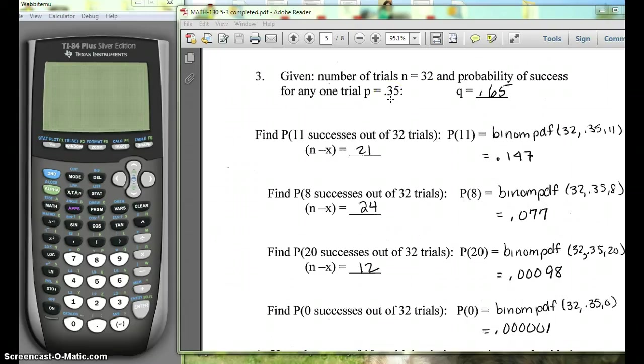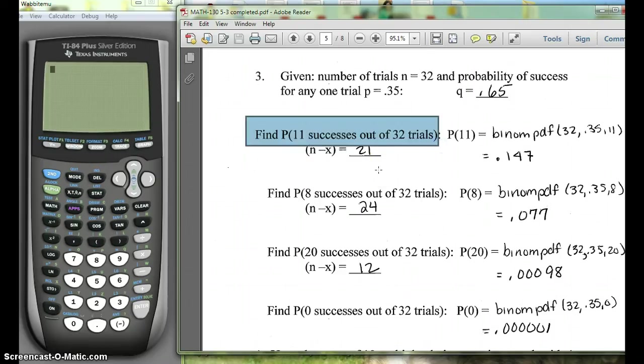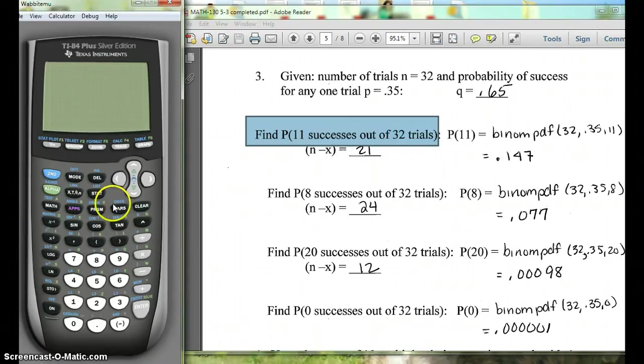So we'll find a couple of these. The first one, we want to find 11 successes out of 32 trials, so that's P(11), so X is 11. To find the binomial probability using our calculator, we want to use the distribution button, which is the second button for the vars. So we hit second vars and we scroll down to zero.